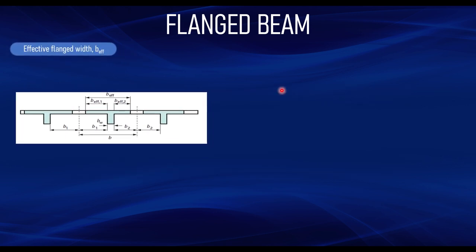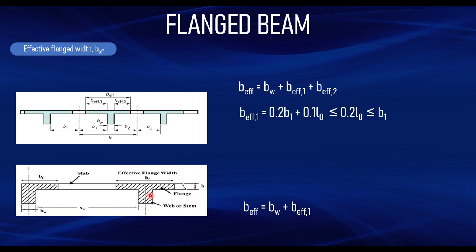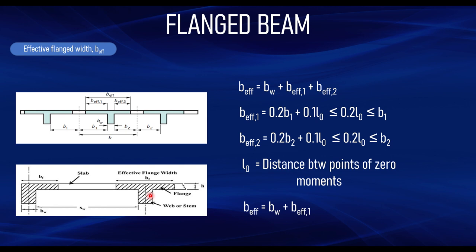For a T beam, BEFF equals BW plus BFF1 plus BFF2, but for an L beam it equals BW plus BFF1 only, because the slab is only attached to one side. BFF1 equals 0.2·B1 plus 0.1·L0, which must be less than 0.2·L0, and must also be less than B1. The same formula applies for BFF2, substituting B2. B1 and B2 are the distances to the adjacent spans.